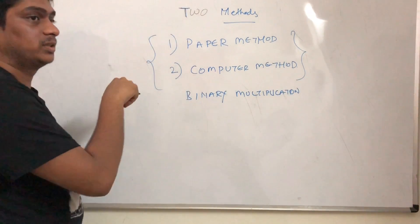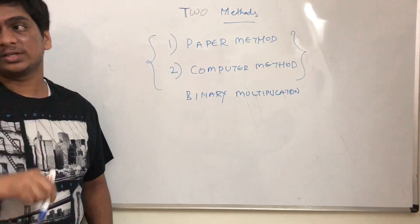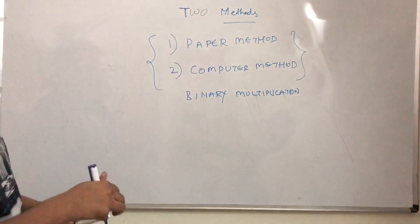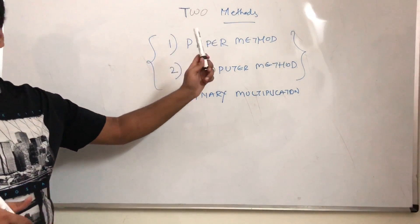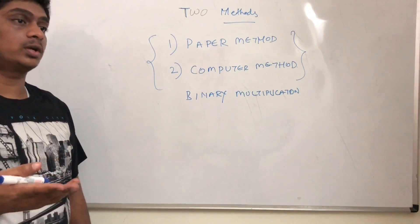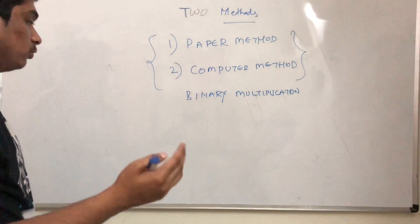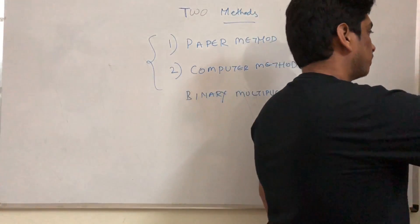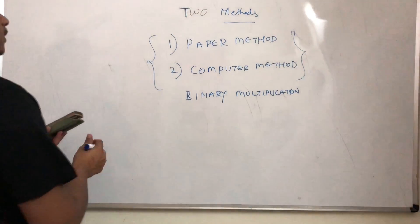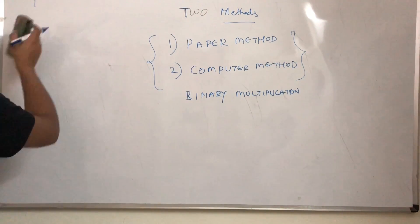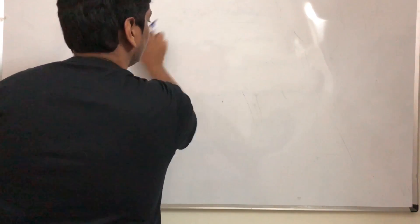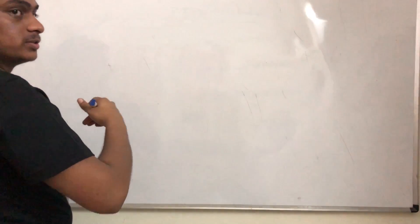These are the two methods in which you can perform multiplication for binary numbers. The paper method, as the name suggests, is nothing but the way you do your multiplication for any numbers. I would like you to pick up two binary numbers and solve along as I do here. First up is the paper method.